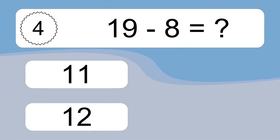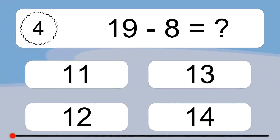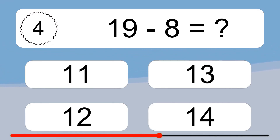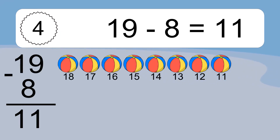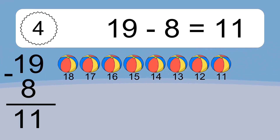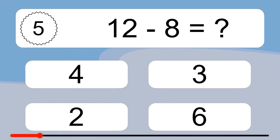19 minus 8 equals what? 19 minus 8 equals 11.